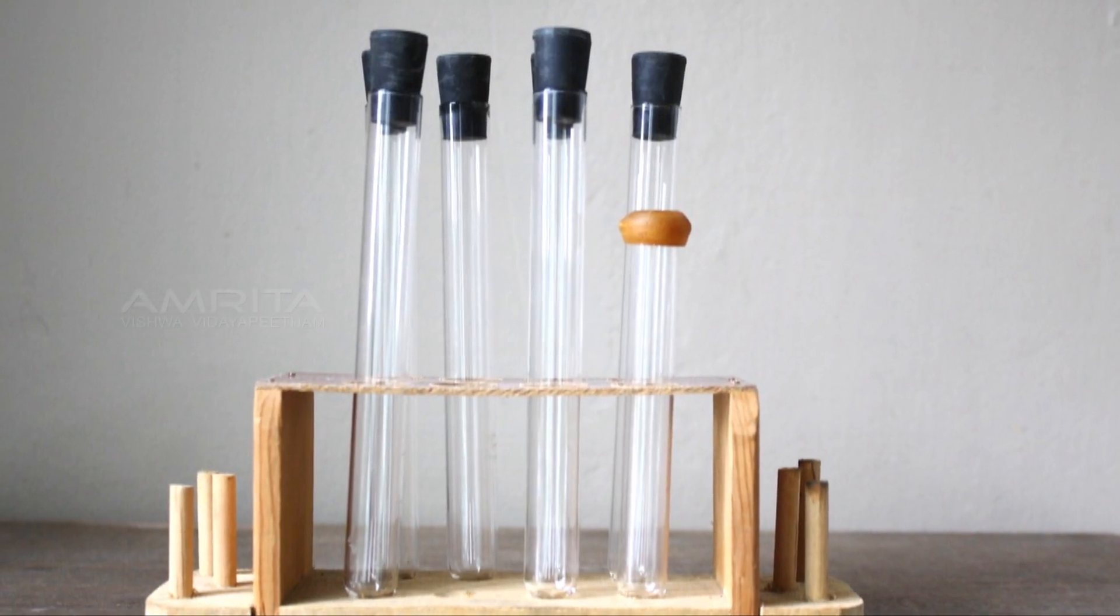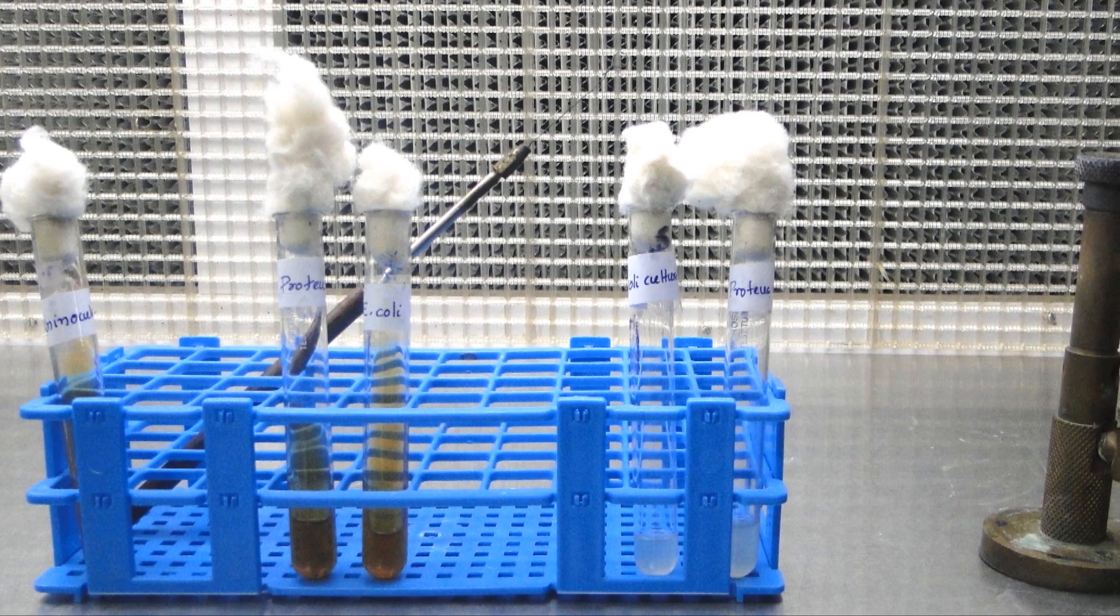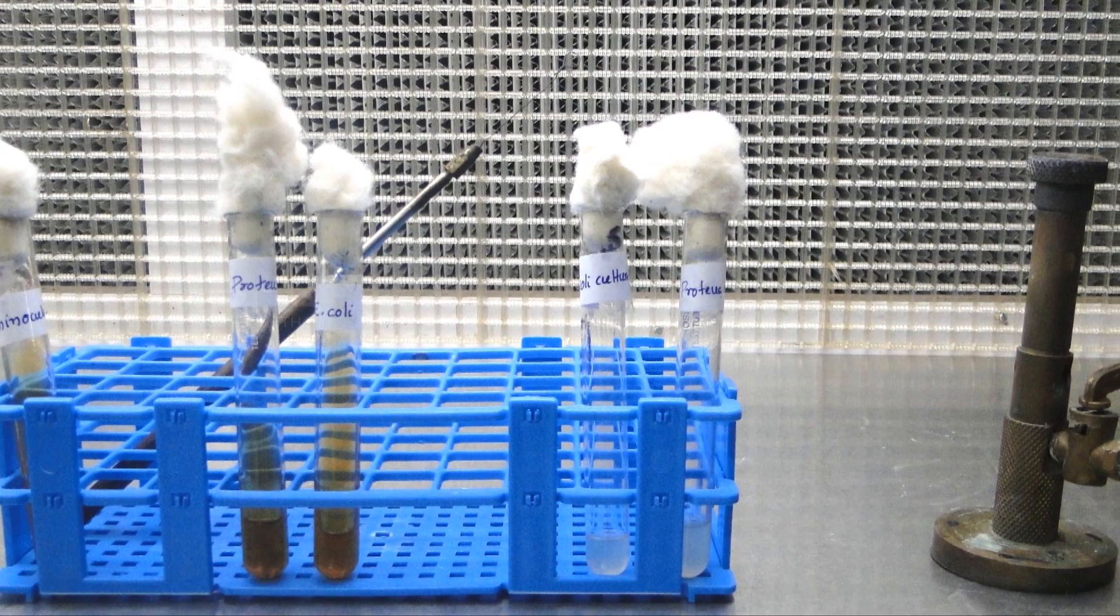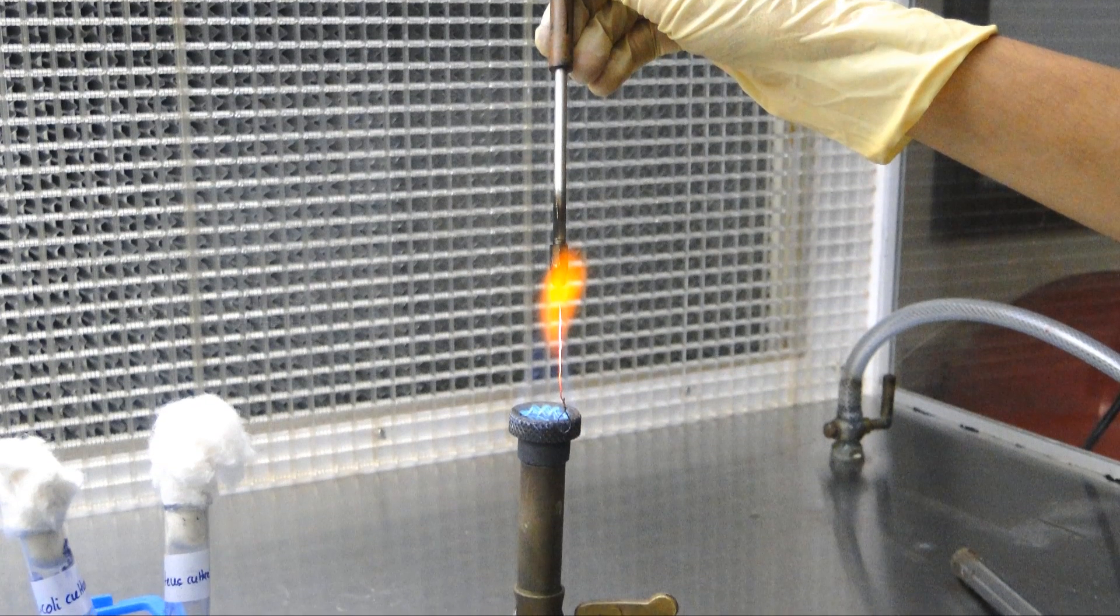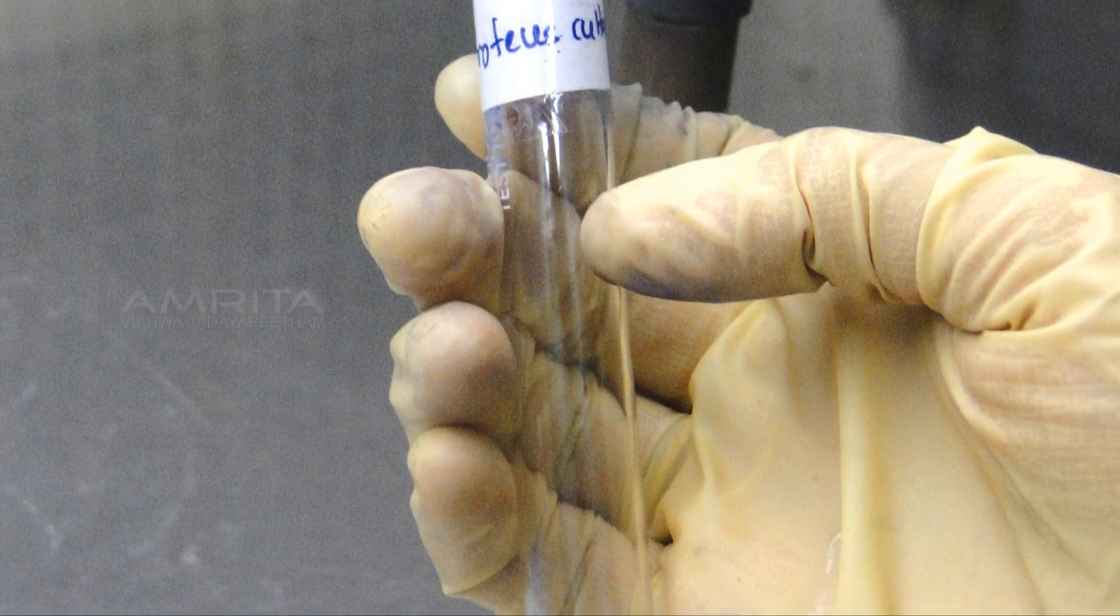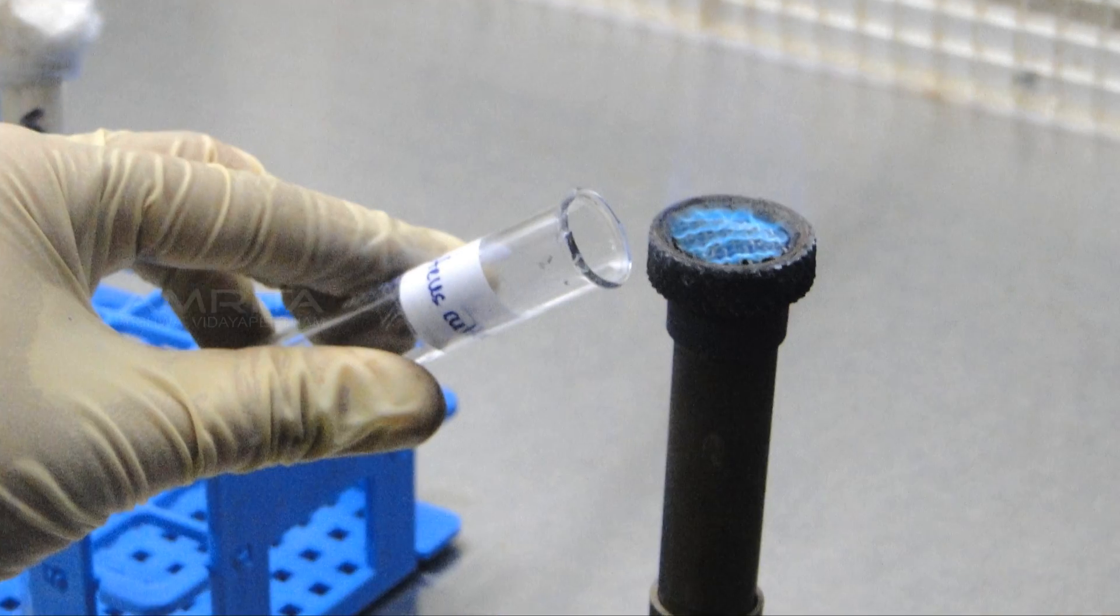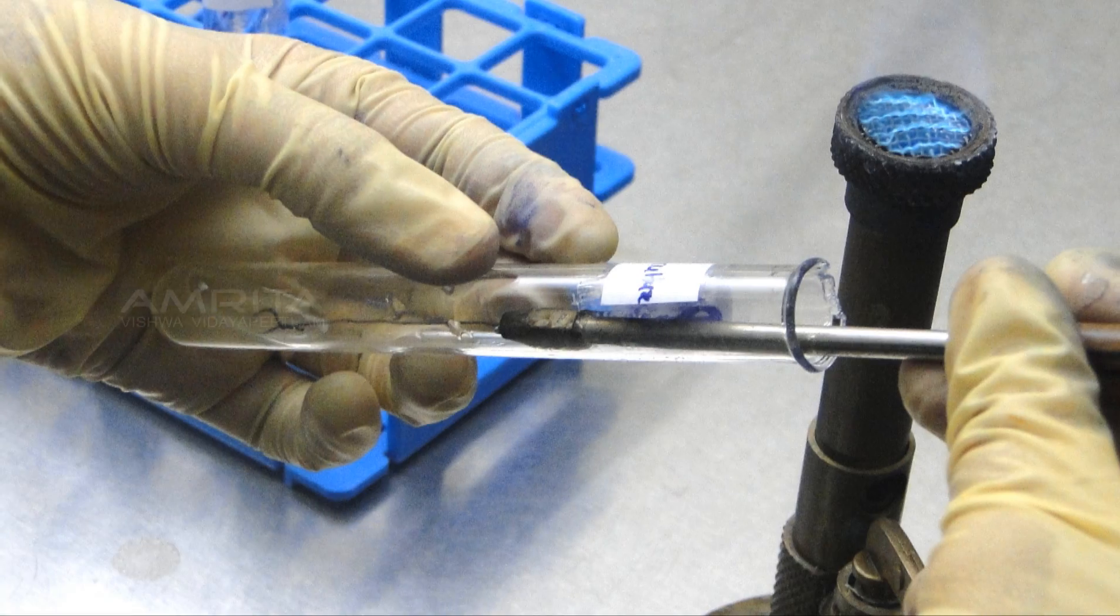Procedure: Arrange the materials required for the test on laminar airflow. Sterilize the inoculating loop in the blue flame of the Bunsen burner until red hot, then allow to cool. Take the tryptic soy broth tube from the rack containing 24-hour culture, gently tap it, remove the cap, and flame the neck of the tube.